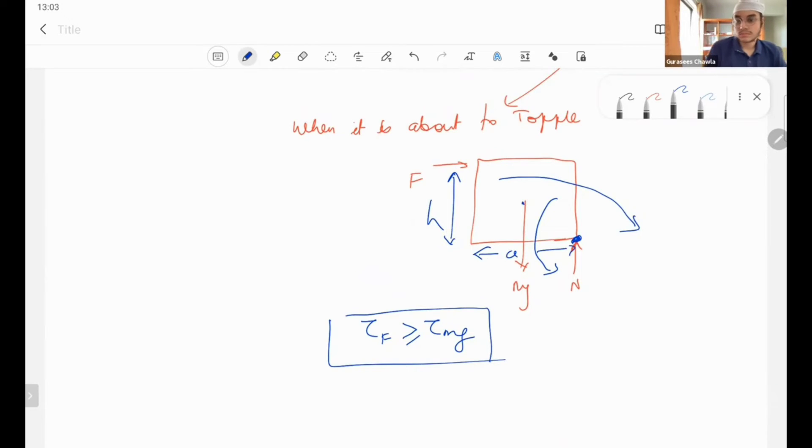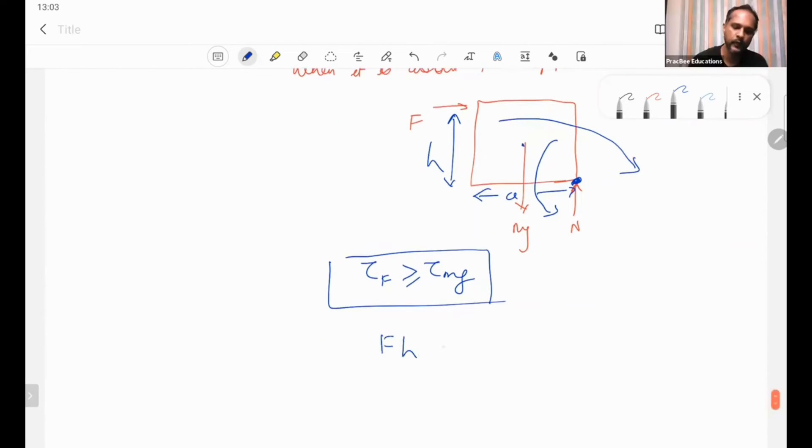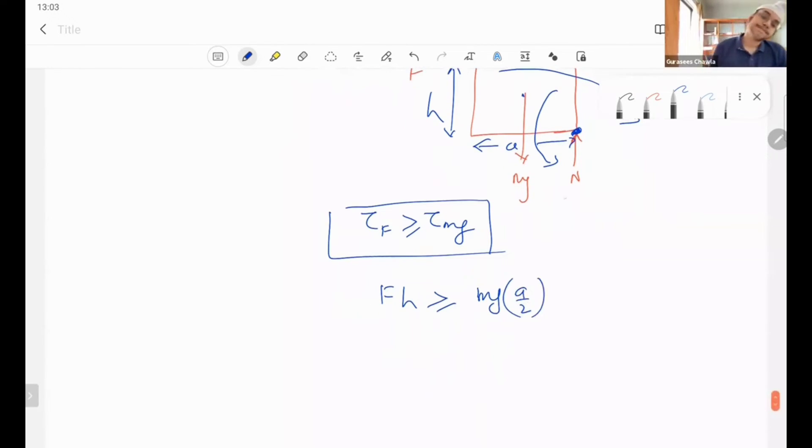So suppose this is h, this is a. So I can write F into h is greater than equal to mg into a by 2, all right, about this point, about point of rotation.